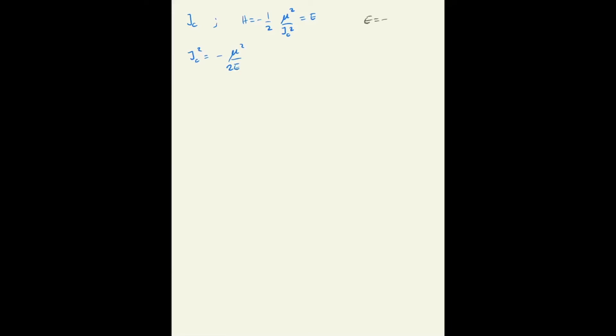Now if you remember that the energy is minus mu over twice the semi-major axis, then this simply becomes mu times the semi-major axis. So this is the last action, the square root of mu times a.